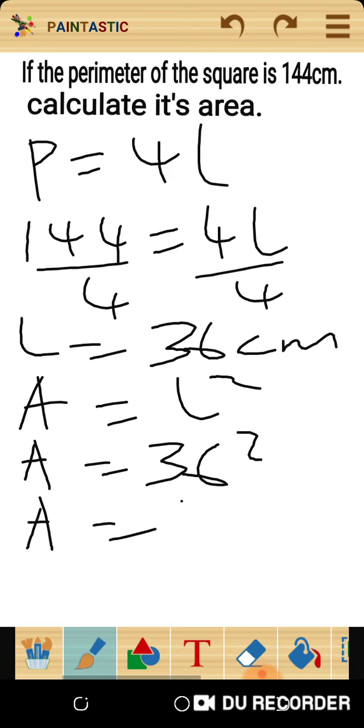36 squared equals 1296 square centimeters.